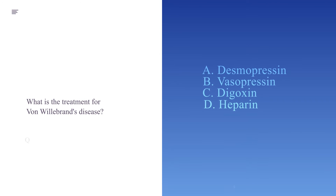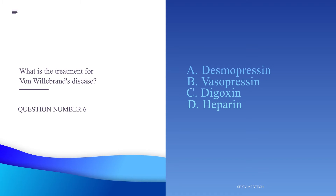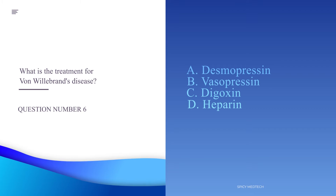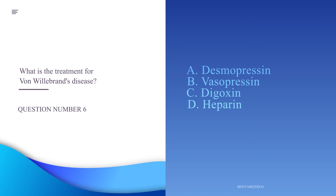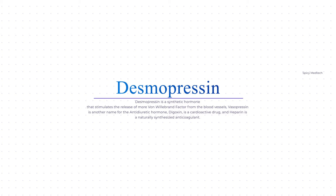Number six: What is the treatment for von Willebrand's disease? A. Desmopressin, B. Vasopressin, C. Digoxin, or D. Heparin. The answer is letter A, desmopressin. Desmopressin is a synthetic hormone that stimulates the release of more von Willebrand factor from blood vessels. Letter B, vasopressin, is another name for the anti-diuretic hormone. Letter C, digoxin, is a cardioactive drug. And letter D, heparin, is a naturally synthesized anti-coagulant.